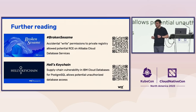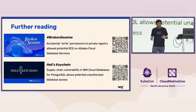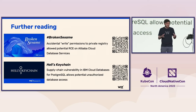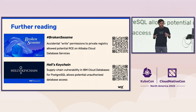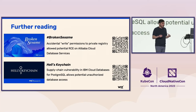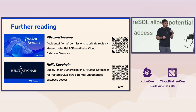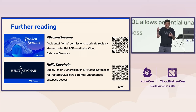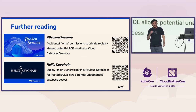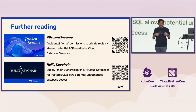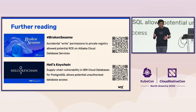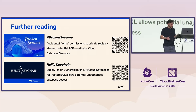If you're interested in this research, what I told you here today was just the tip of the iceberg. We have a very detailed blog about all the vulnerabilities called Broken Sesame — that's the top QR code. We also had similar research on IBM Cloud where we were also able to do supply chain poisoning — that's the bottom QR code, called Hell's Keychain.